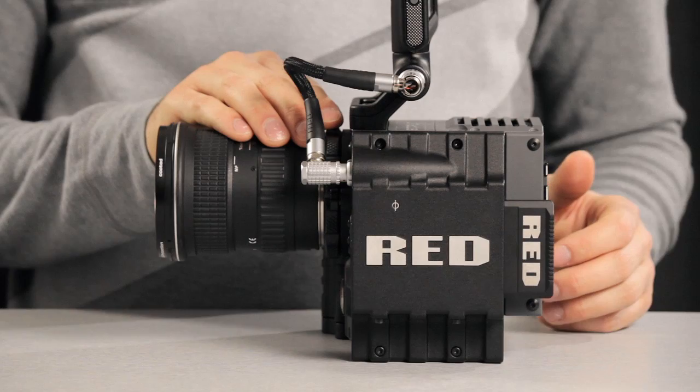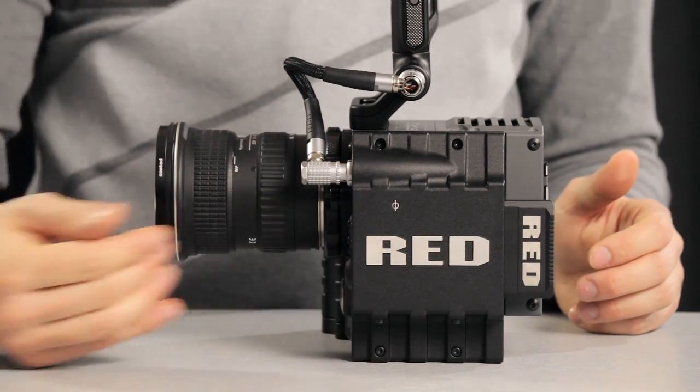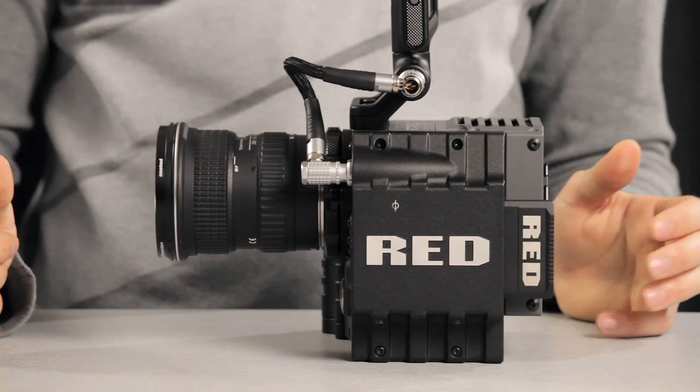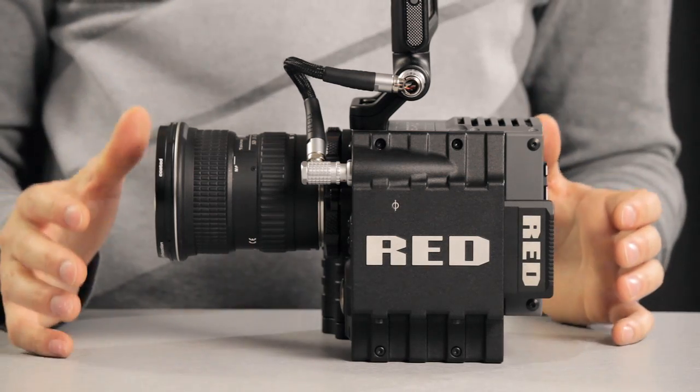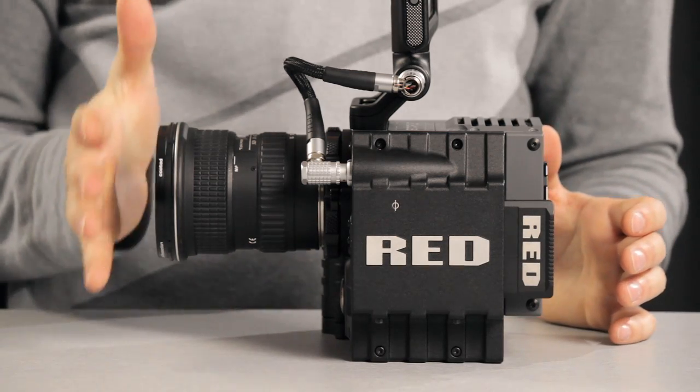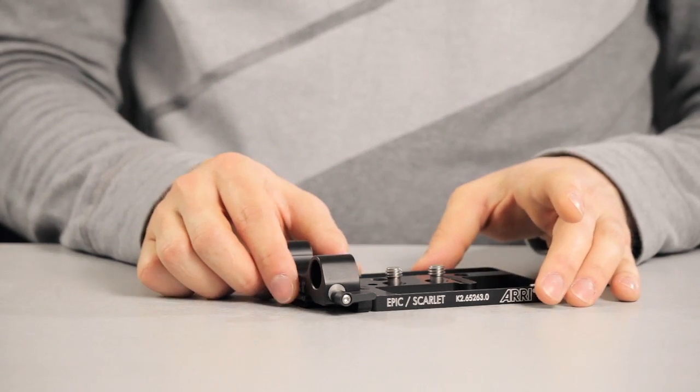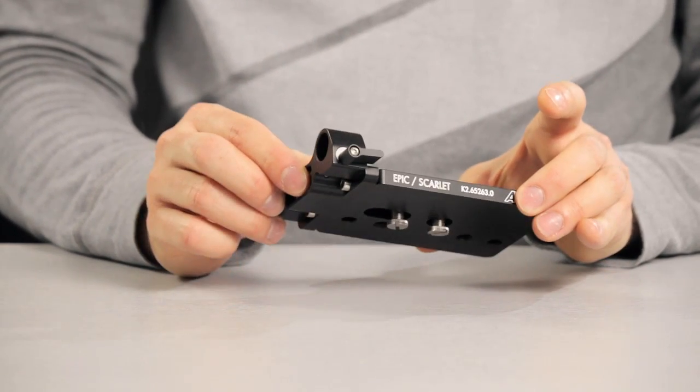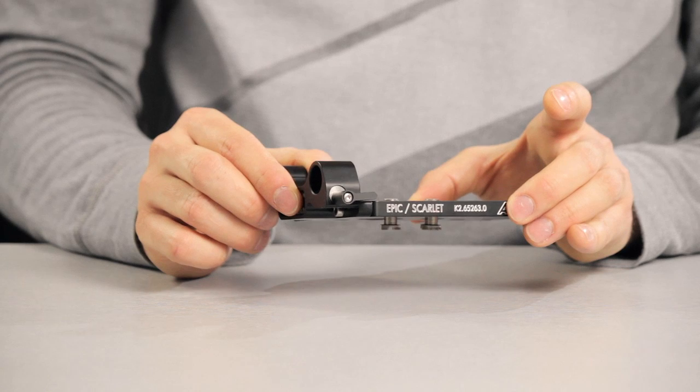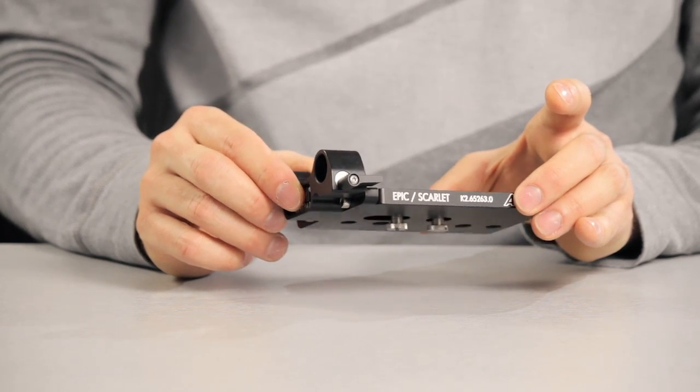The lens port of the Scarlett X is very high so you cannot use traditional 15mm standard rails out of the box, as the follow focus and matte box will not match the lens height. You can use a 15mm lightweight support adapter such as this one from ARRI. It will allow you to install 50mm rails at the correct height.